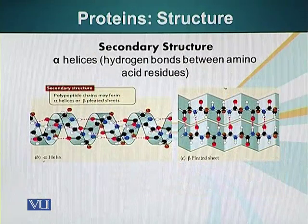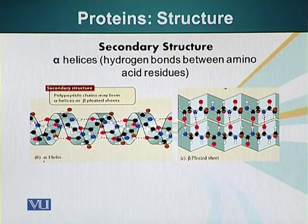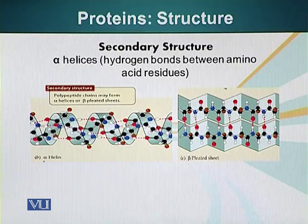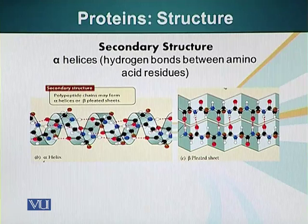And this is important in the secondary structure. There are two types of secondary structures: alpha helices and beta sheets. Alpha helices are present in fibrous proteins. They result from the formation of hydrogen bonds between the hydrogen atom attached to the nitrogen atom in the peptide bond and the oxygen atom attached to the carbon atom. The two types, as I mentioned, are alpha helices and beta sheets.